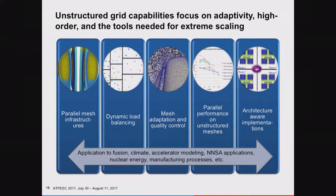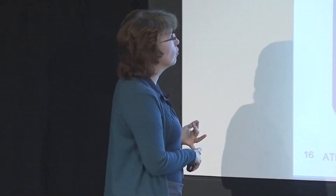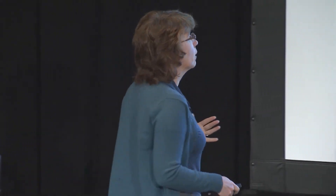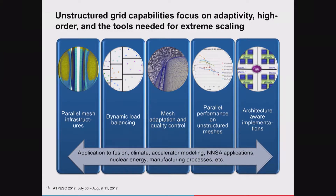On the unstructured grid side—which is more my background—there are a lot of interesting challenges, particularly as you're moving toward extreme scale. Parallel mesh infrastructures: how do you make them highly efficient on machines that have millions of cores, particularly when you've got lots of memory access needed to manage those meshes? Dynamic load balancing has become a much more interesting and challenging area of research over the last several years as we get these deep memory hierarchies, where data placement is so very important—as Jack talked about. Our load balancing techniques increasingly use multi-level partitioning strategies to understand how to place cells on the core and on each individual node.